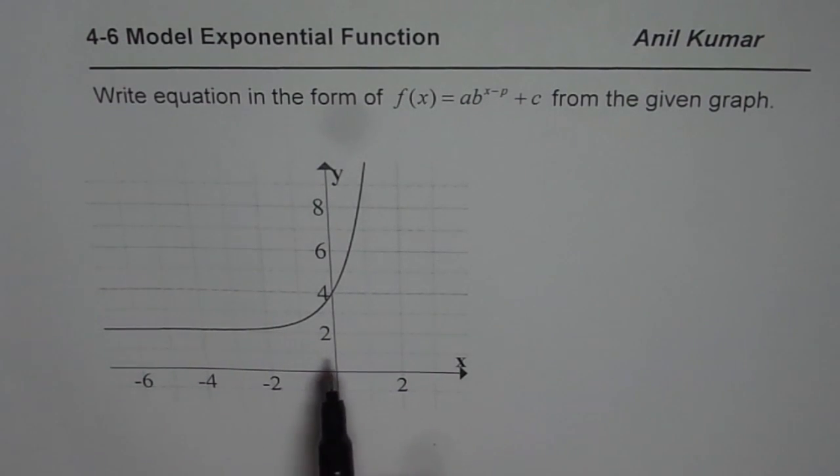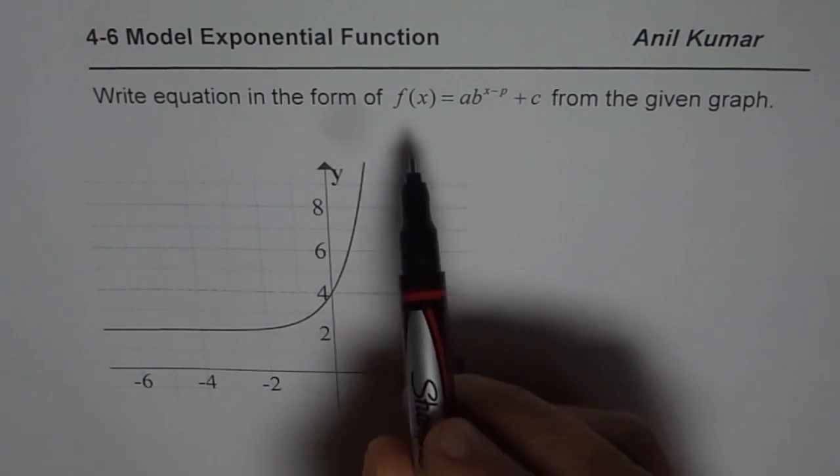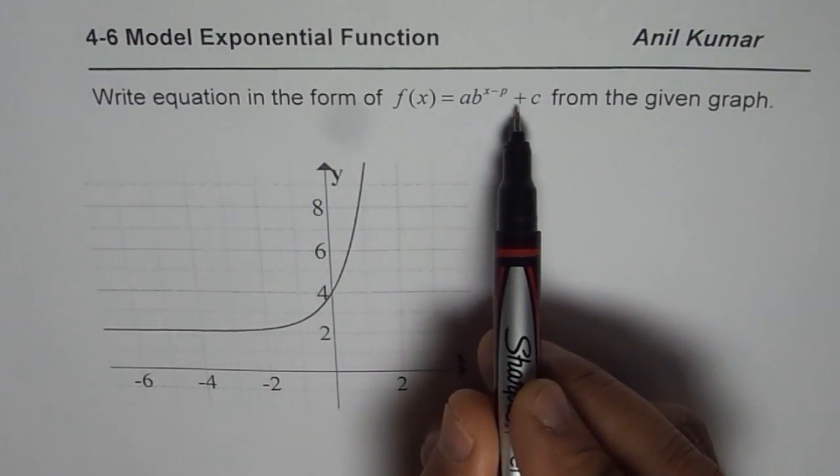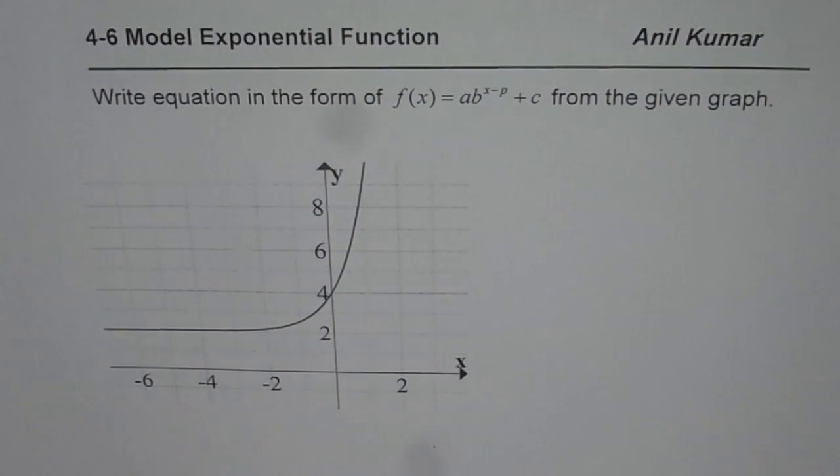So in this example, we are given the graph of an exponential function. We need to write its equation in the form f(x) = ab^(x-p) + c. How do we do that?